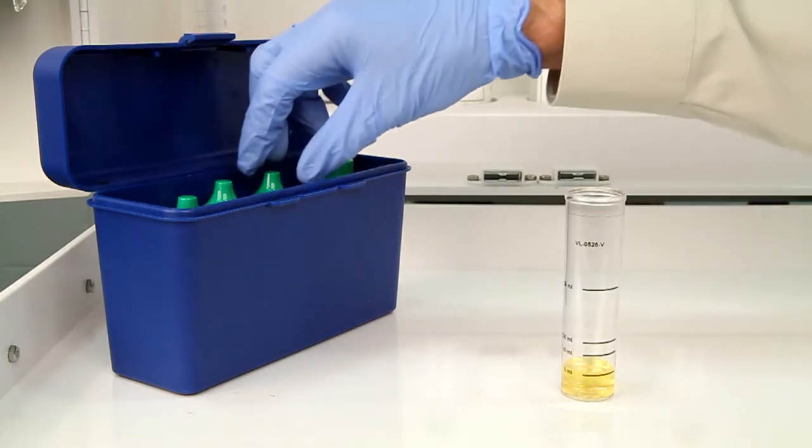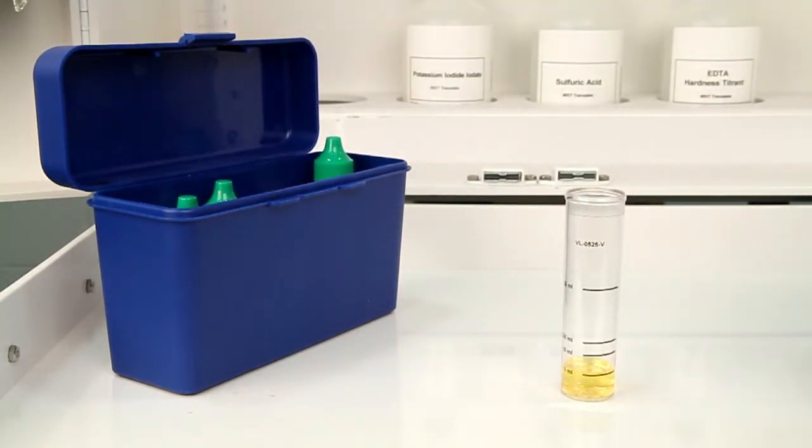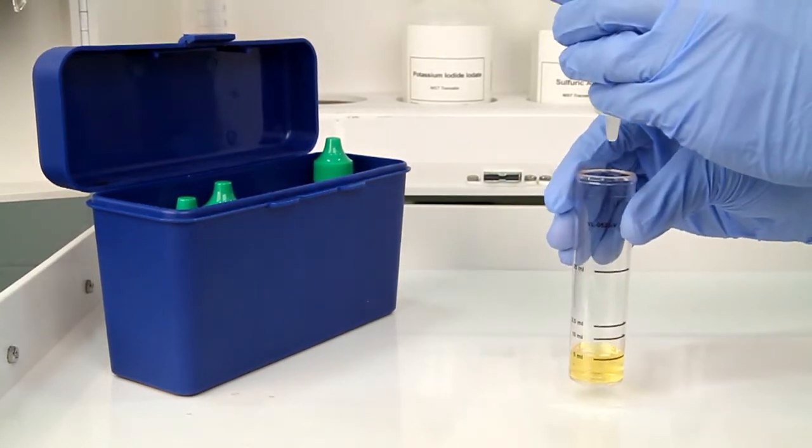The next step is to add 2 drops of starch indicator solution 0.5%. The bottle contains a dropper tip, so it's important to hold the bottle vertically to get a consistent drop size.